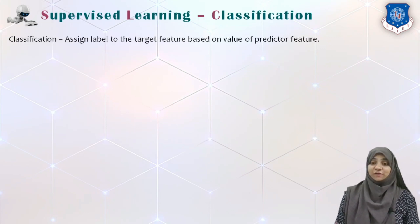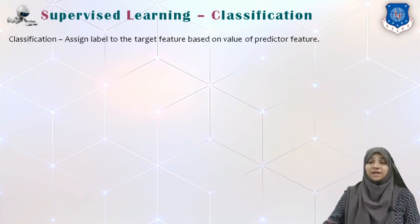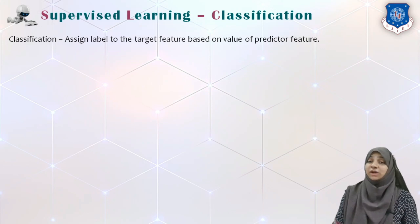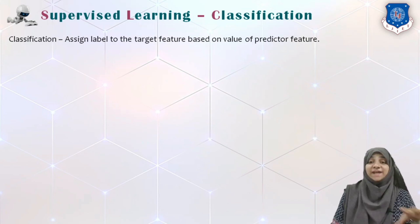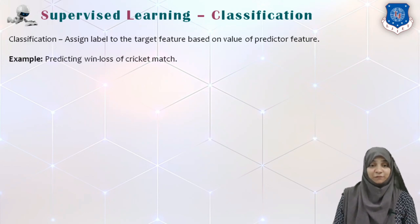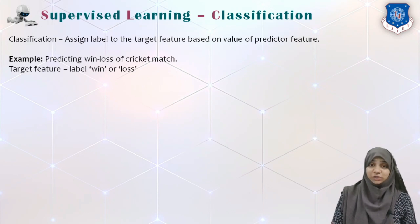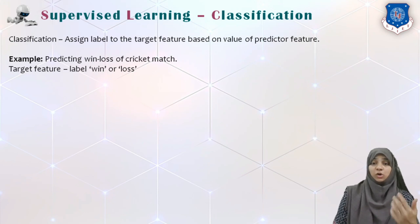Classification is a process of assigning a label to a target feature based on the values of predictor features. We have two types of features: input features, called predictor features, and output features, called target features. Consider an example that predicts winning or losing of a cricket match — there are only two possibilities the target feature can take.